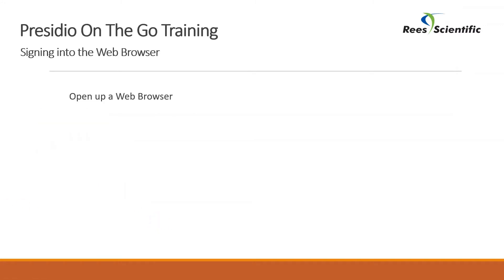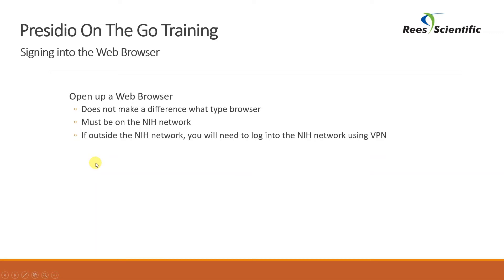To use ReS Presidio on the Go you must open up a web browser. Any web browser will work, however you must be logged into the NIH network. If you are outside the NIH network you can only access ReS Presidio on the Go if you have VPN access into the network.